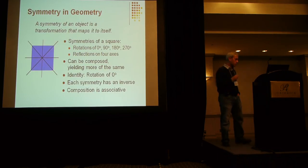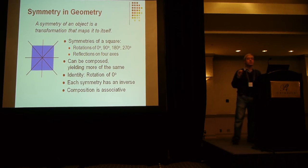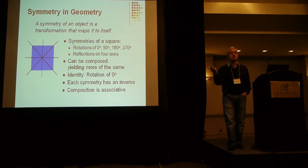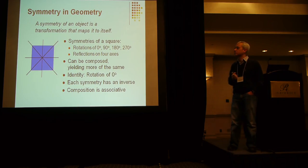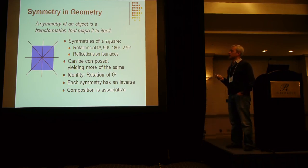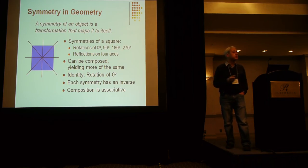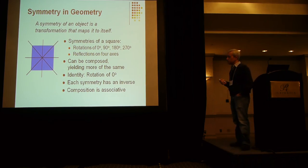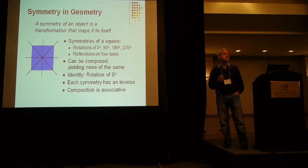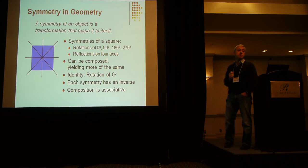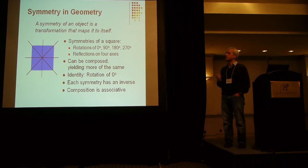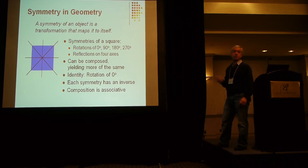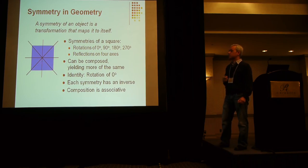Let me start with a very brief tutorial on symmetry group theory. Many of you probably already know this, but it sets the stage for what's to follow. The best place to start is geometry, where it's simplest and most intuitive. What is the symmetry of an object? A symmetry of an object is a transformation that maps the object to itself. For example, a square has eight symmetries: rotations of 0, 90, 180, and 270 degrees, and reflections on the four axes.